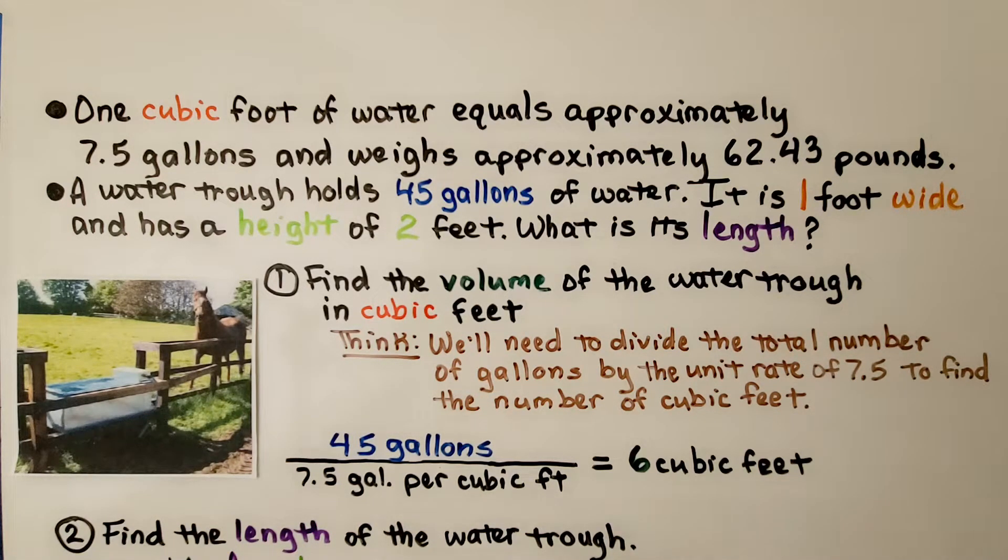The first thing we have to do is find the volume of the water trough in cubic feet. We'll need to divide the total number of gallons, the 45, by the unit rate of 7.5 to find the number of cubic feet. We get 45 gallons divided by 7.5. That's equal to 6 cubic feet.